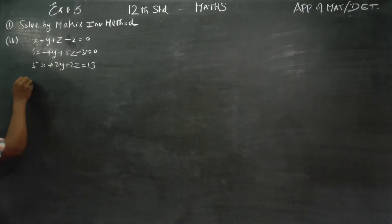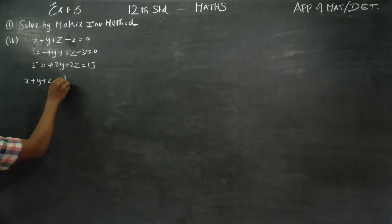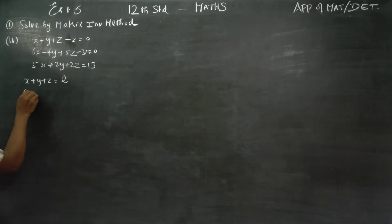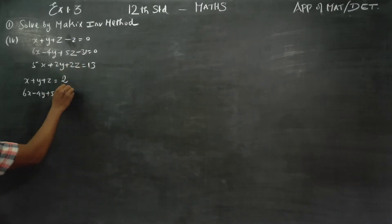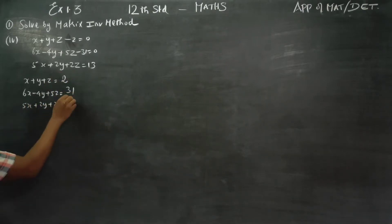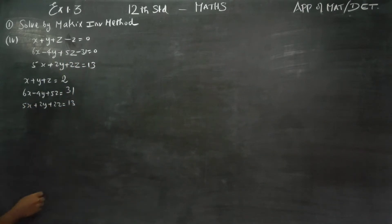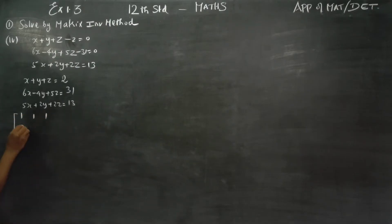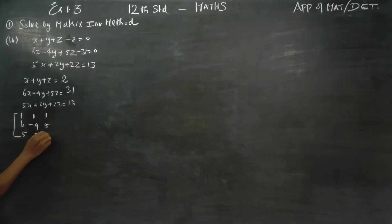We will solve the problem. The equations are: 6x minus 4y plus 5z equals minus 31, and 5x plus 2y plus 2z equals 13. We form the coefficient matrix with entries 1, 1, 1 in the first row; 6, minus 4, 5 in the second row; and 5, 2, 2 in the third row.